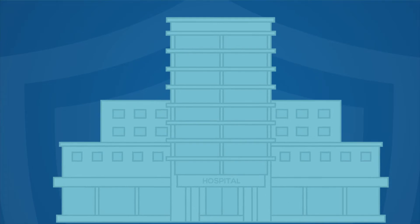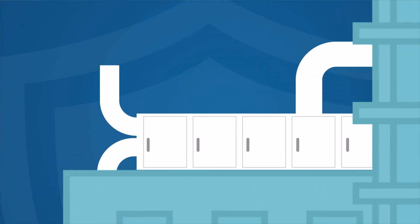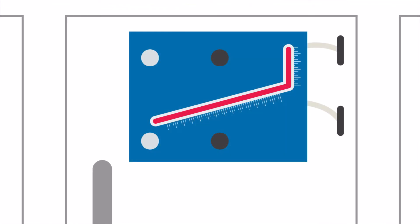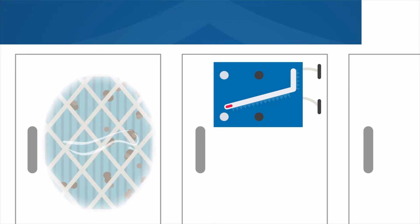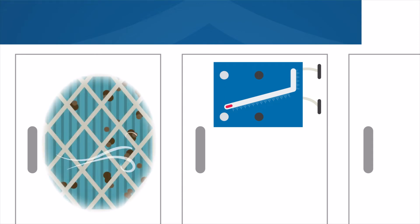At the air handling unit, we examine and measure several components regularly. For example, we monitor how clean the filters are by using a manometer, a gauge that shows how much the pressure decreases as air is pushed through the filters. This is very important because lower pressure indicates dirtier filters and, as a result, less clean air being sent throughout the building.